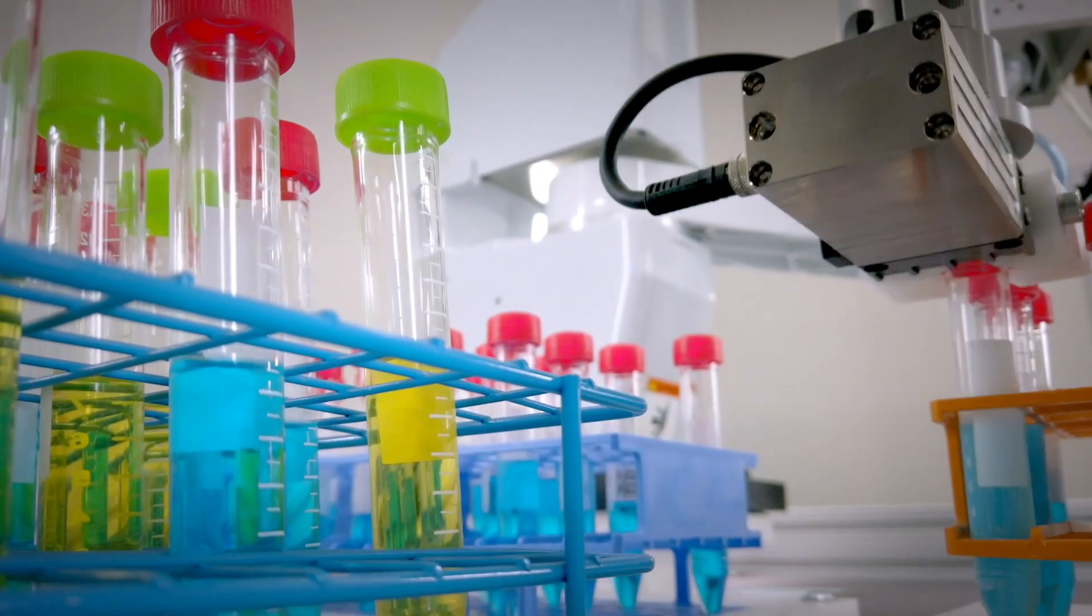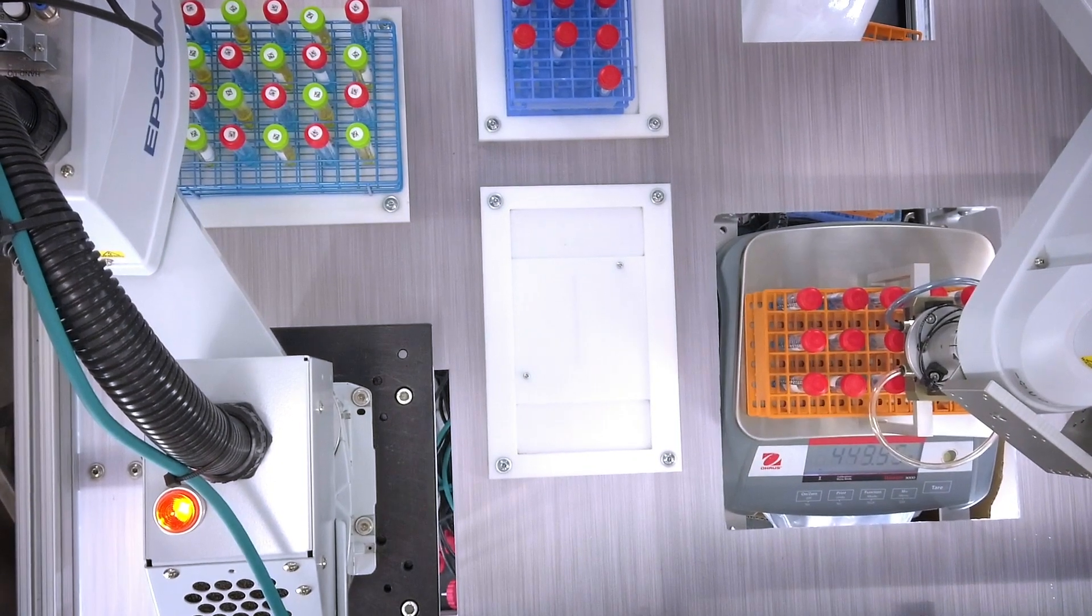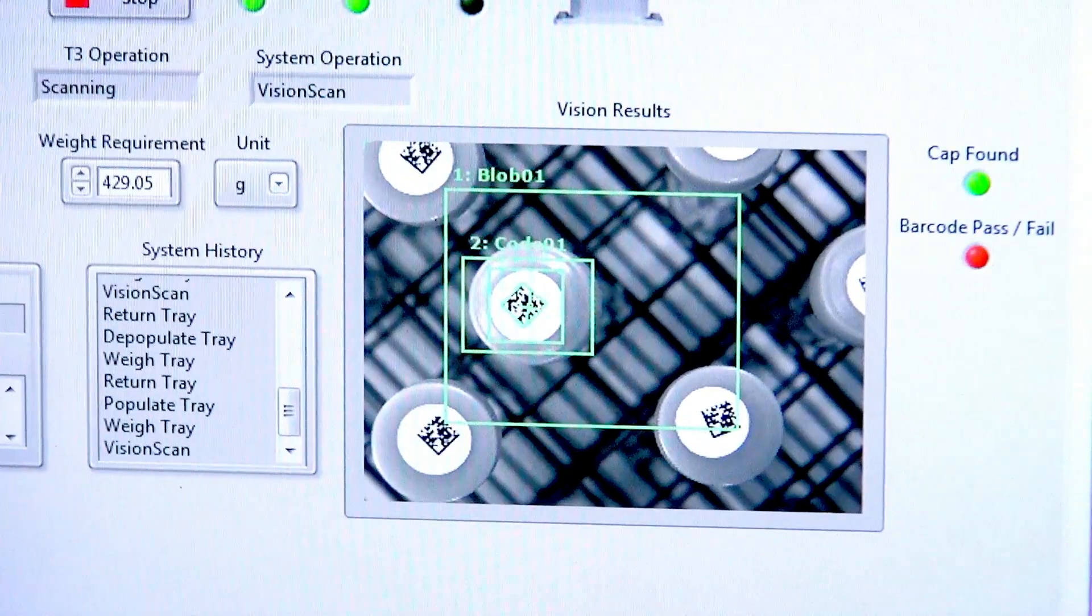The T6 takes the rack back to the scale and verifies that the rack is fully populated. Once the scale confirms to the system that everything is okay, then the T3 moves on to a vision inspection and vision-guided pick-and-place.